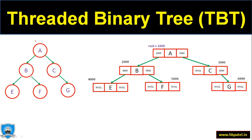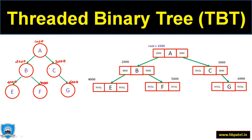If I represent this binary tree using a structural representation — for example, addresses 1000, 2000, 3000, 4000 for various nodes — then the left side of the root node contains address 2000, the right side contains 3000. The left side of 2000 contains 4000 and right side 5000. The left of C is null and the right of C is 6000.